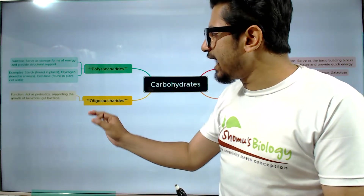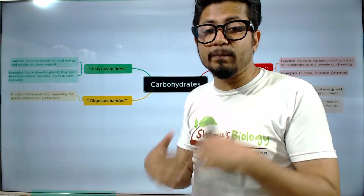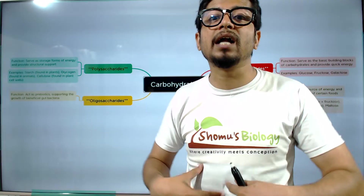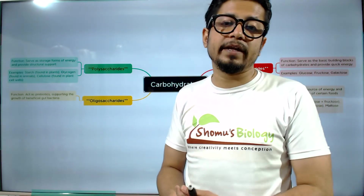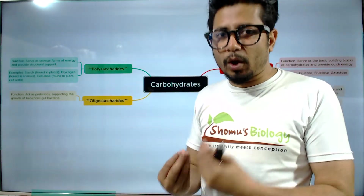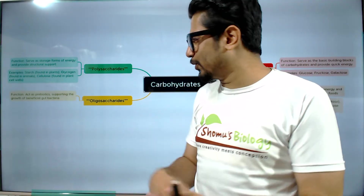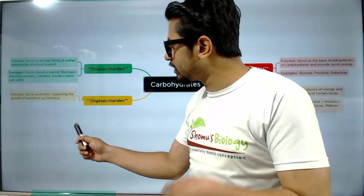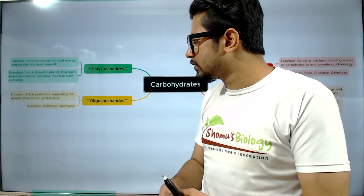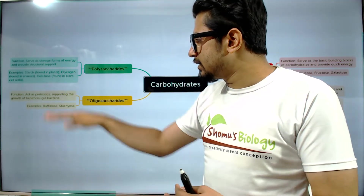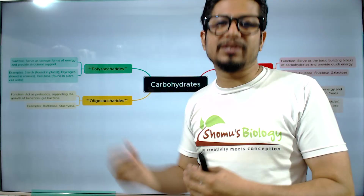Oligosaccharides act as prebiotics, supporting the growth of beneficial gut bacteria. That's why oligosaccharides are very important — microorganisms rely on oligosaccharides for their growth and utilization. Examples include raffinose and stachyose, which are examples of oligosaccharides.